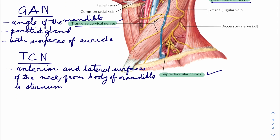The fourth nerve is the supraclavicular nerve. The supraclavicular nerves emerge from beneath the posterior border of the sternocleidomastoid muscle and descend across the side of the neck, passing onto the chest wall and shoulder region down to the level of the second rib. The supraclavicular nerves are divided into three branches: the medial branch, the intermediate branch, and the lateral branch.